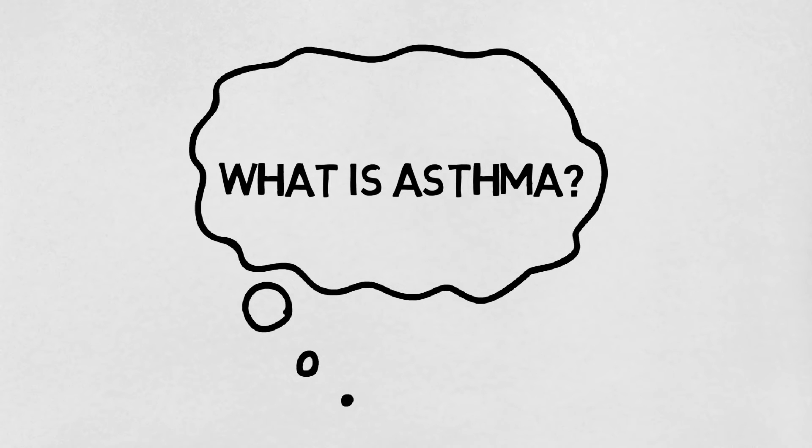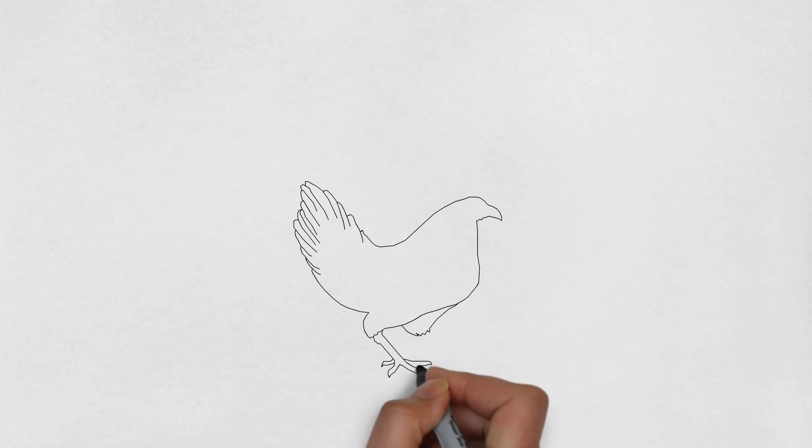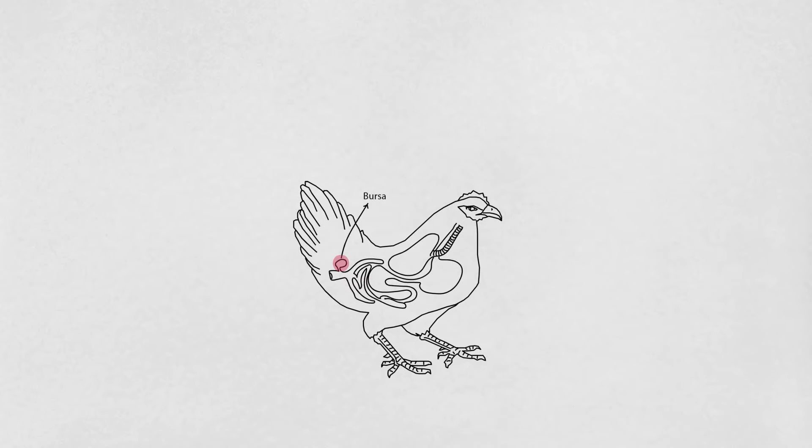While the exact cause is unknown, some of the basic immunology of asthma can be understood by first looking at the chicken. The bursa of Fabricius is an organ unique to birds, and by studying young chickens with this organ removed, it was noted that the chickens were unable to mount a response against foreign pathogens because they couldn't produce antibodies.